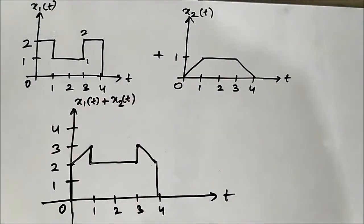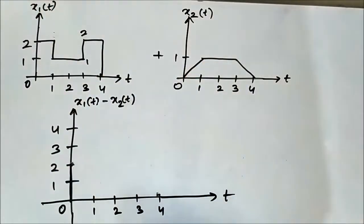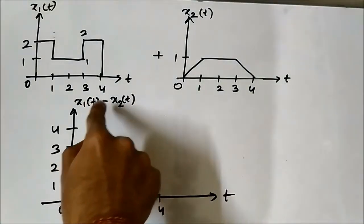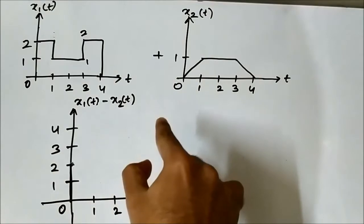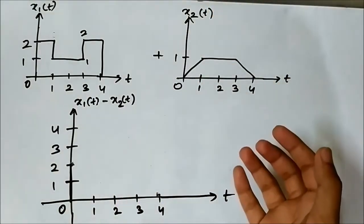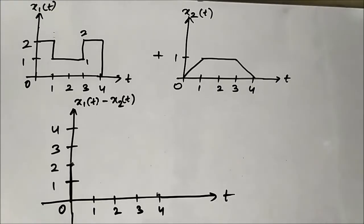Now we will perform x1(t) minus x2(t) — signal subtraction — on the same two signals. You can visualize it as x1(t) plus negative x2(t). The same concept applies: at each time instant we subtract the amplitude of x2(t) from x1(t).